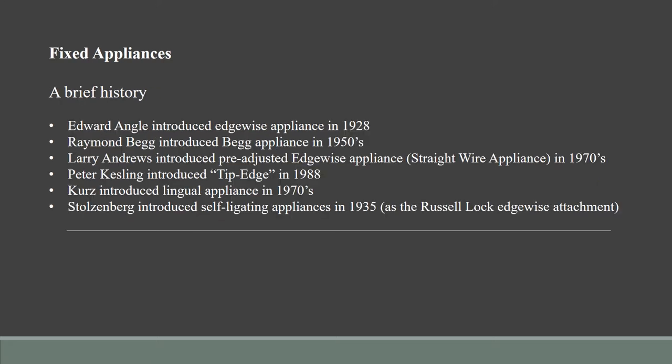Coming to a brief history on fixed appliances, it was Edward Angle who introduced the edgewise appliance in 1928, almost a century ago. Following that it was Raymond Begg who introduced the Begg appliance back in the 1950s. Followed by Larry Andrews who introduced the pre-adjusted edgewise appliance, also known as the straight wire appliance, in the 1970s.